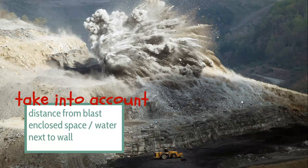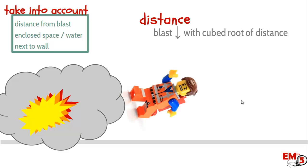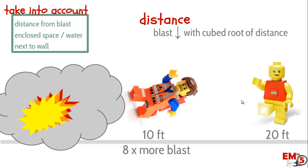The first factor is distance from the blast and then what your surroundings are. Distance matters a lot, actually. The blast energy decreases with the cubed root of the distance, which basically means if you're 10 feet away from the blast, you have 8 times more blast injury than if you're 20 feet away. So it really makes a big difference.